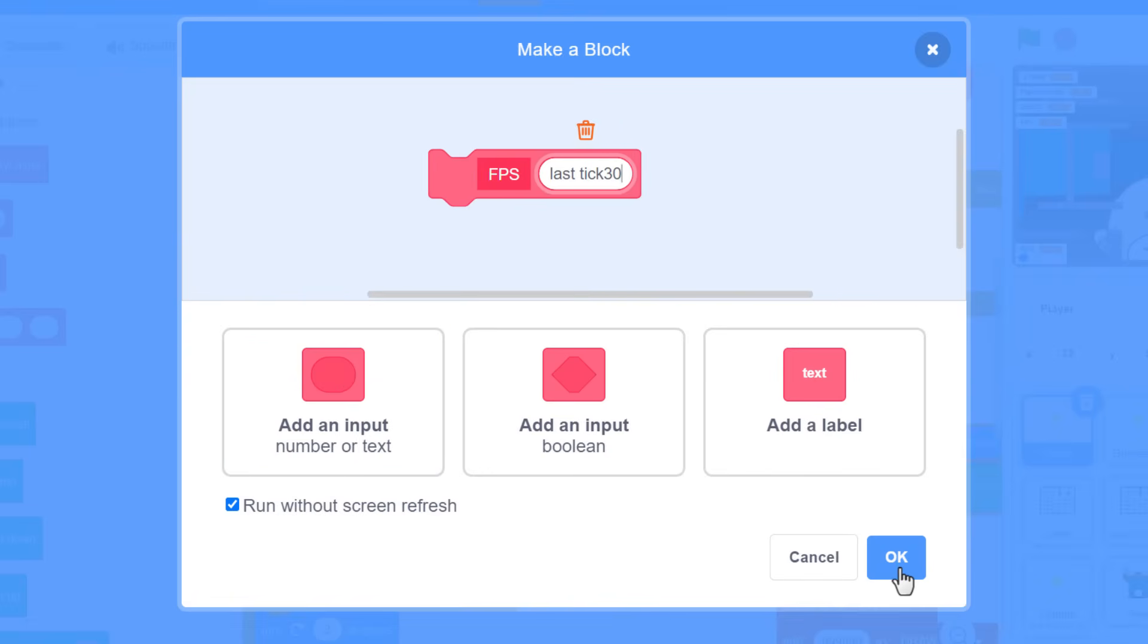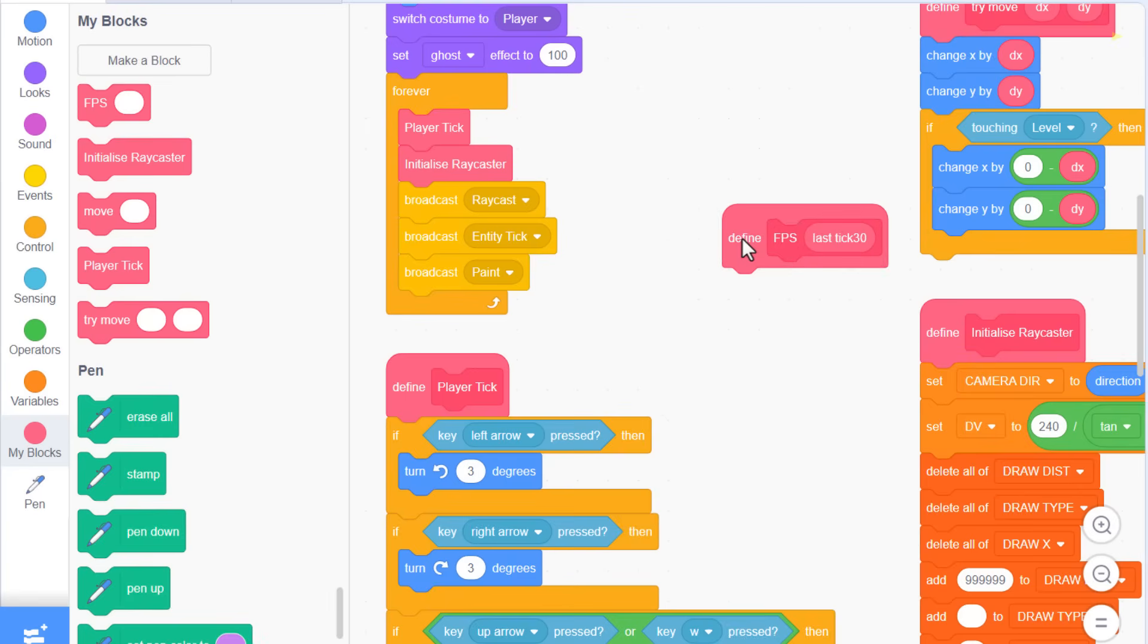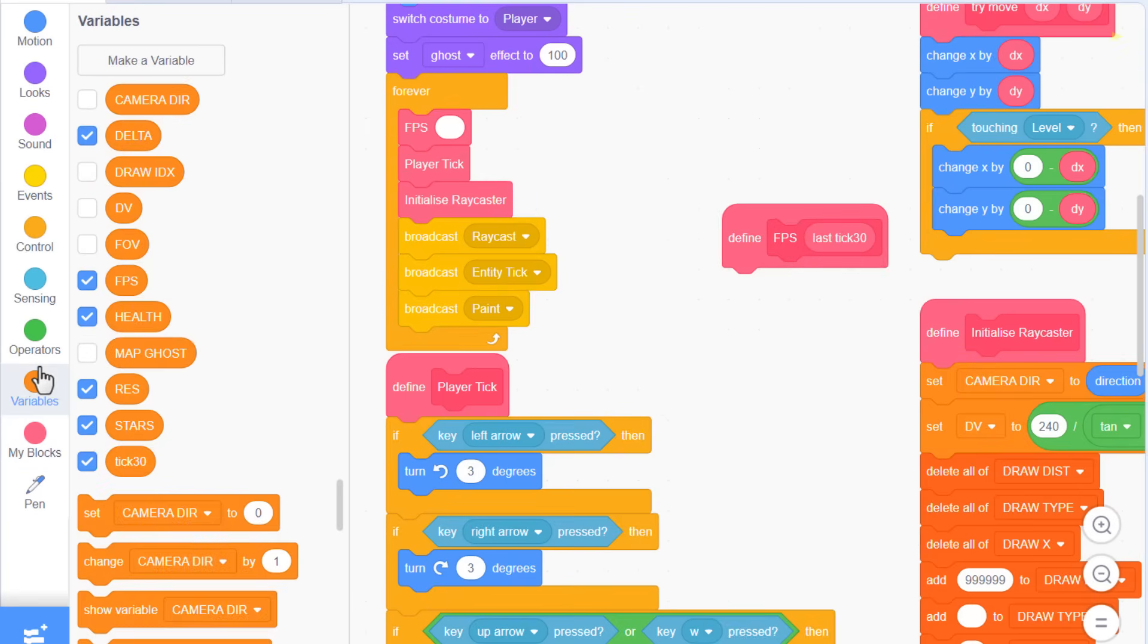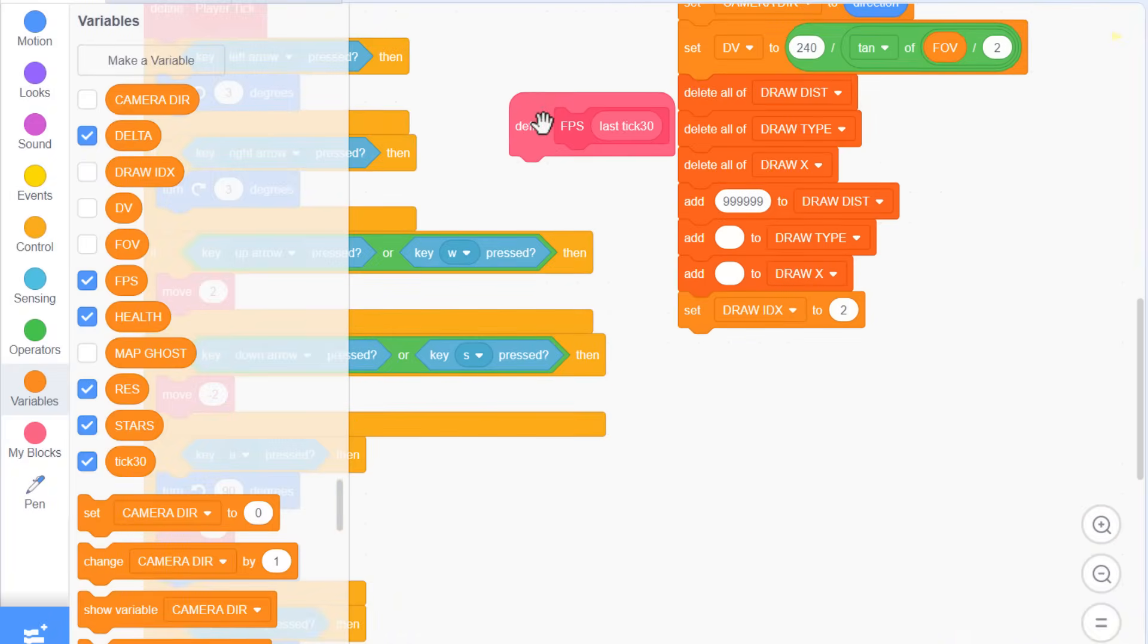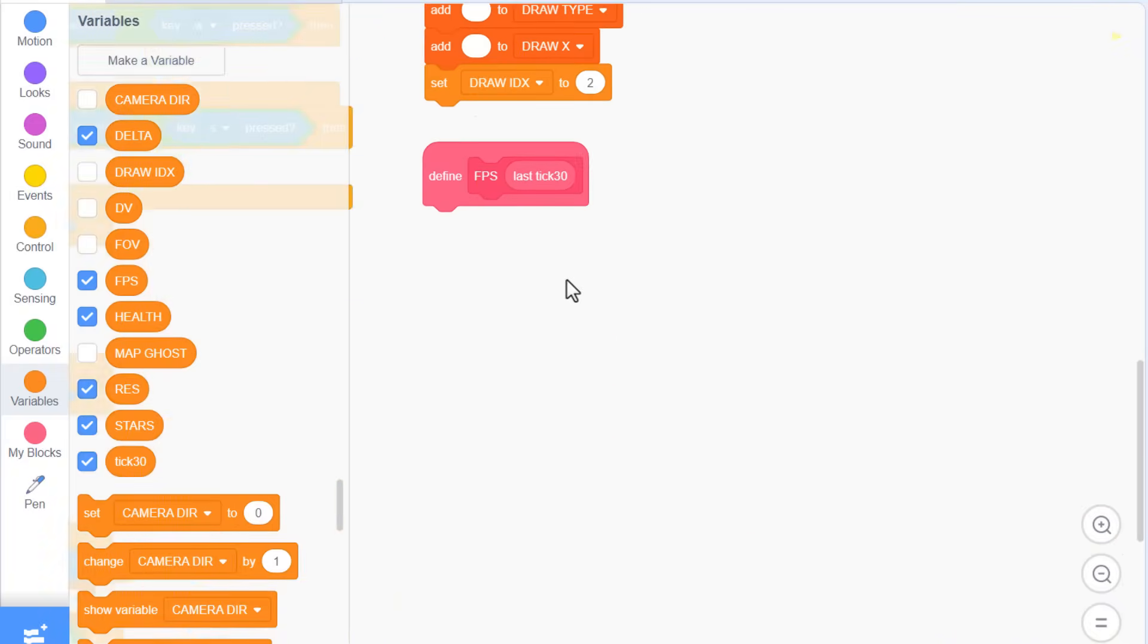Just pop the new FPS block in at the top of the forever loop, and the input just takes the current tick 30 value. Super. So let's manhandle that into some free space, and code up the new FPS counter scripts.